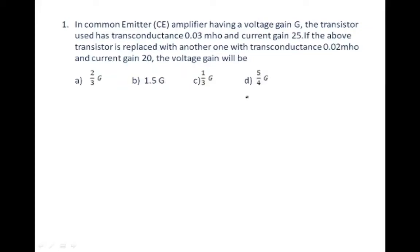Let's discuss this question: In a common emitter amplifier having a voltage gain G, the transistor used has transconductance 0.03 mho and current gain of 25. If the transistor is replaced with another one with transconductance 0.02 mho and current gain 20, what will the voltage gain be?